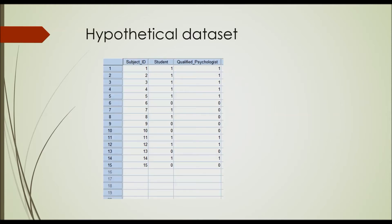Our hypothetical dataset has 15 patients. The student rates each patient as 1 or 0 — 1 meaning displays symptoms of MDD, and 0 meaning does not display symptoms of MDD — and the same goes for the psychologist rating the exact same patient. I want to do a Kappa analysis to see the level of agreement between these two raters, to see whether they agree or disagree, and whether that level of agreement is significant, using the Kappa analysis in SPSS.